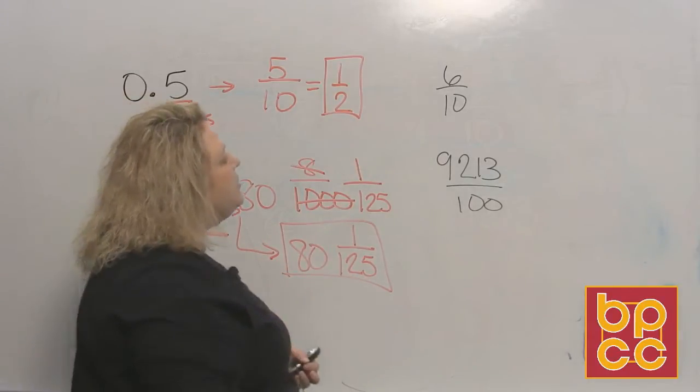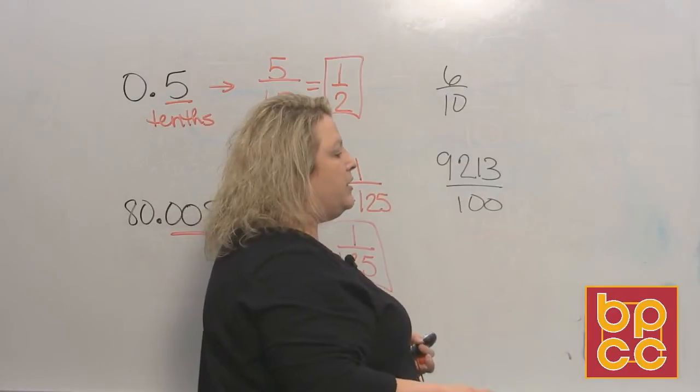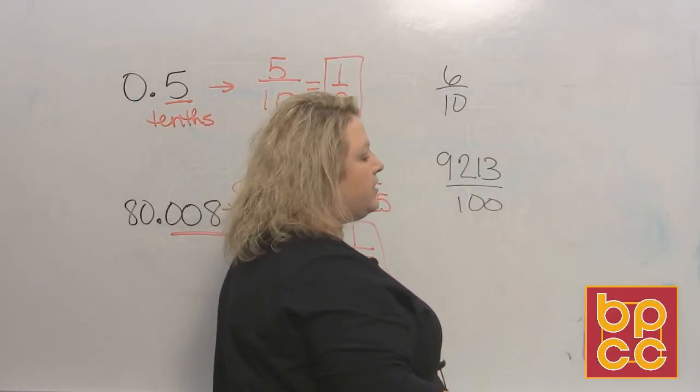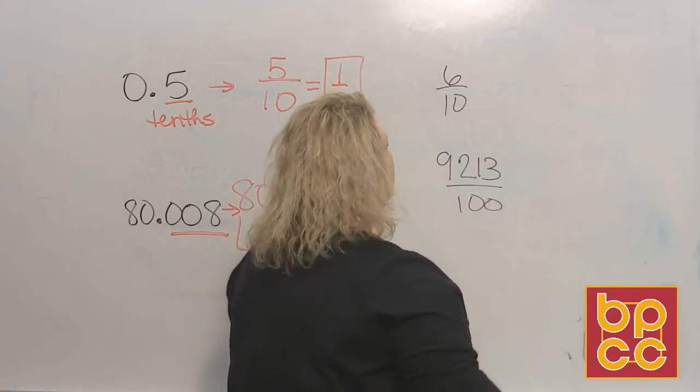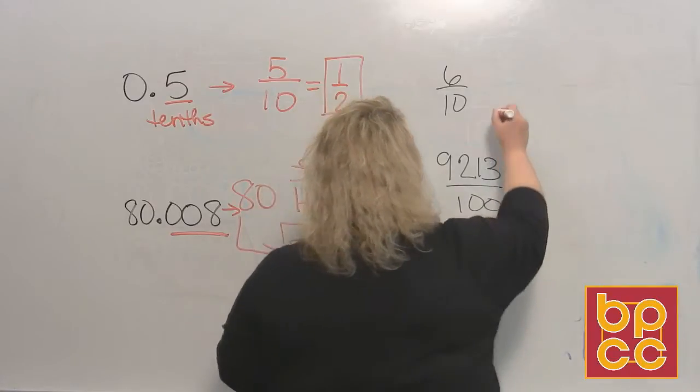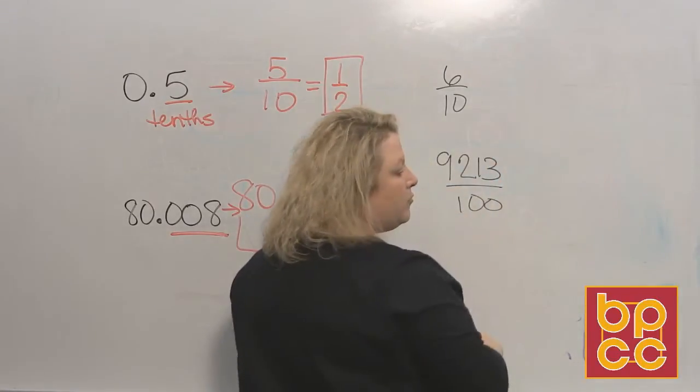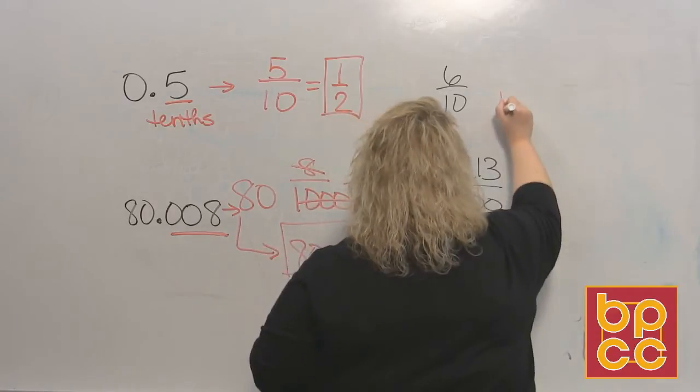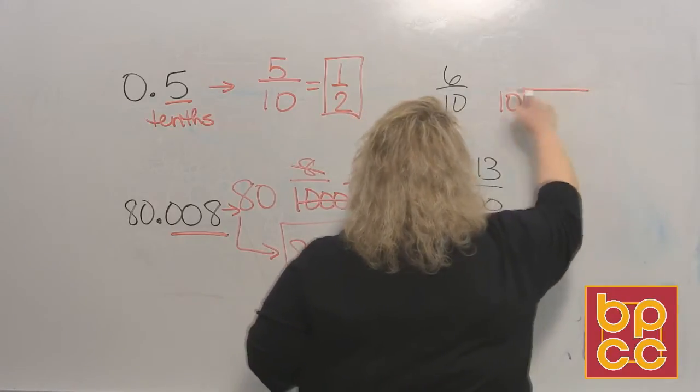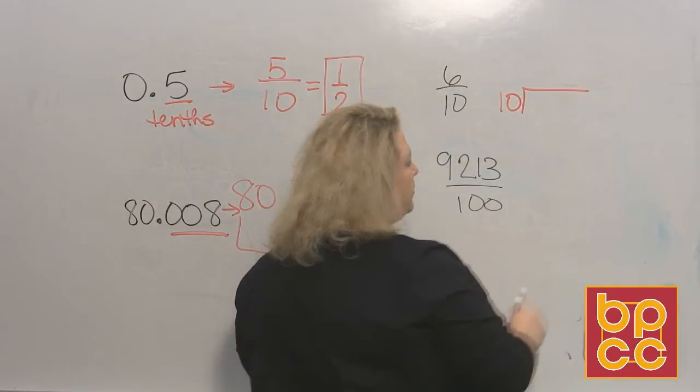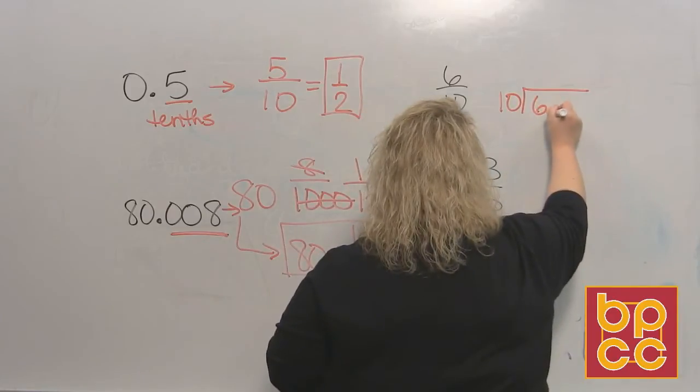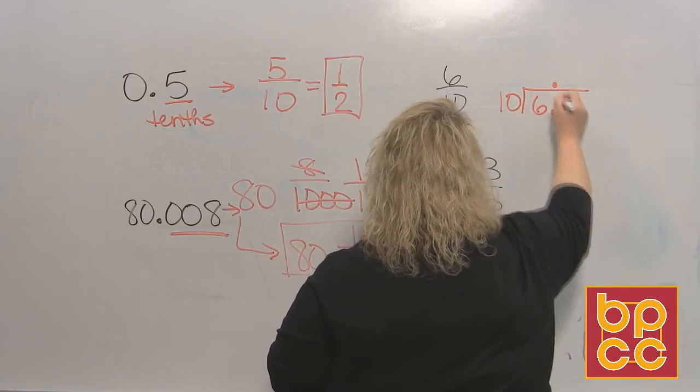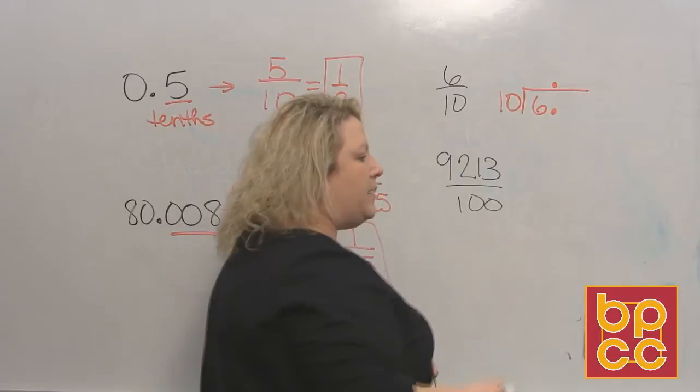Okay, now we're going to do the reverse. I'm going to give you the fraction and we're going to turn around and make it into a decimal. So the easiest way to do that is to divide, just like in a previous module. You take the bottom number, which is your divisor, and you put it on the outside. You take the top number of the fraction, which is your dividend, put it on the inside, and then you start your dividing process.